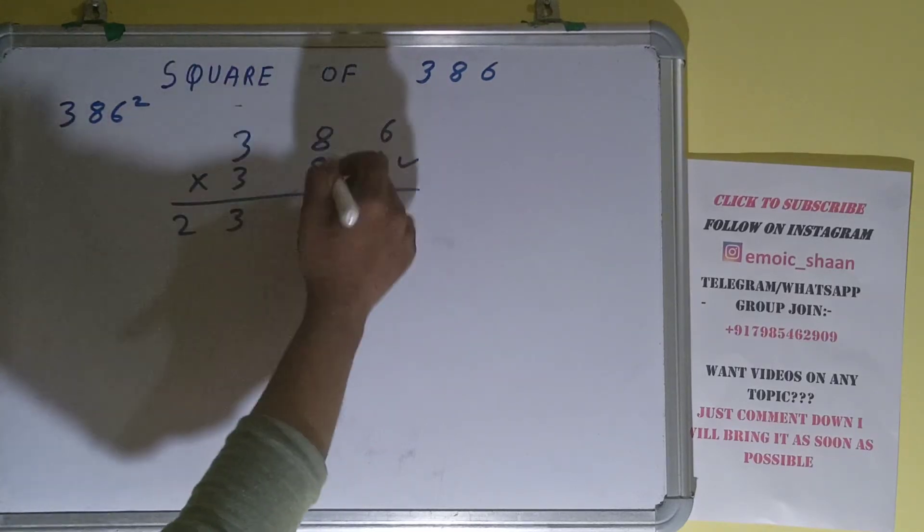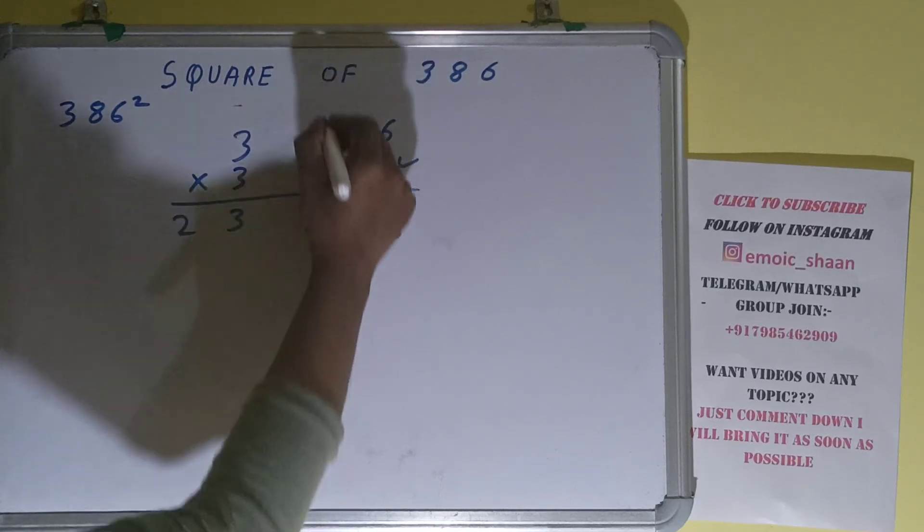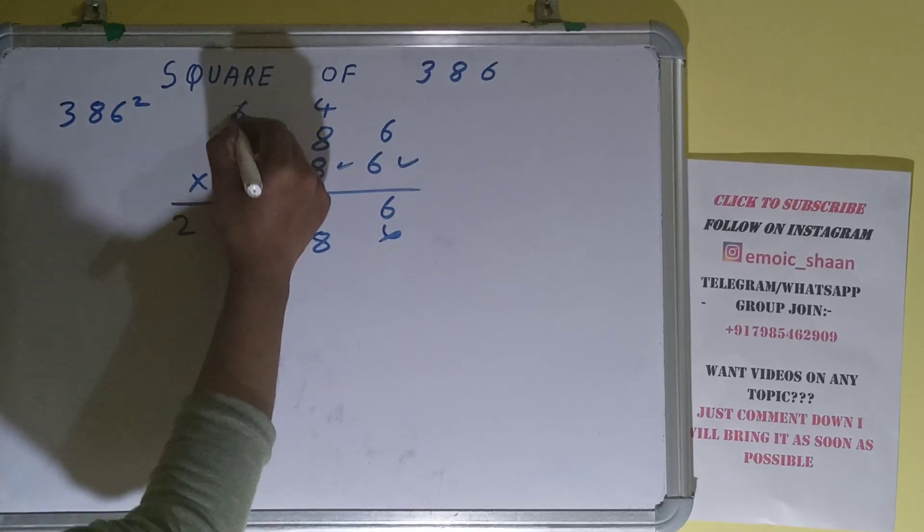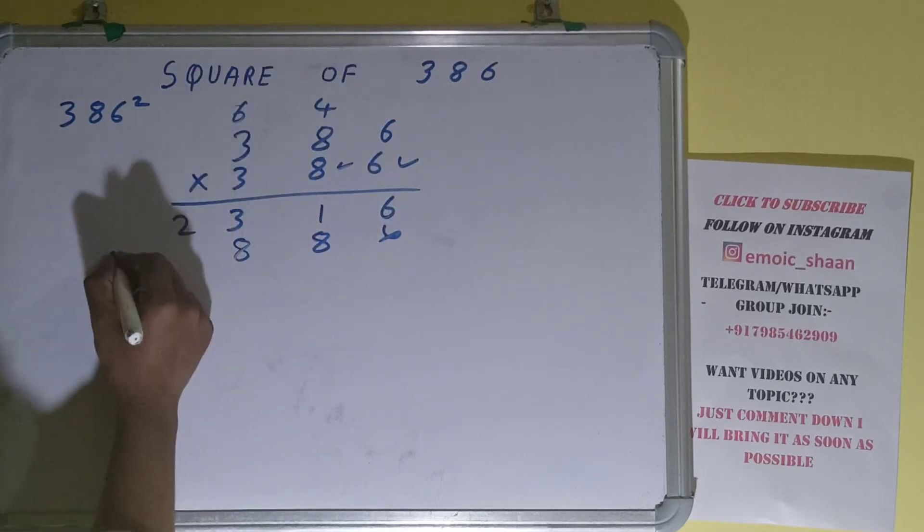Now this 8. 6 times 8 are 48, 4 carry. 8 times 8 are 64 plus 4 is 68, 6 carry. 8 times 3 is 24 plus 6 is 30.